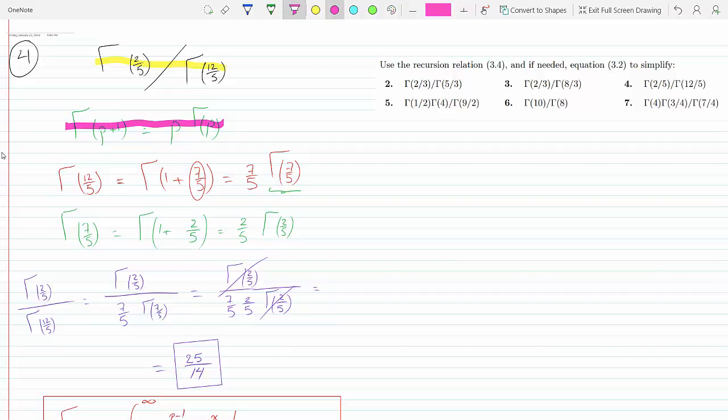And gamma function of 7/5 I would repeat the same thing again and break it into 1 plus the remaining fraction, which is 2/5. So according to recursion formula, this becomes 2/5 gamma 2/5.